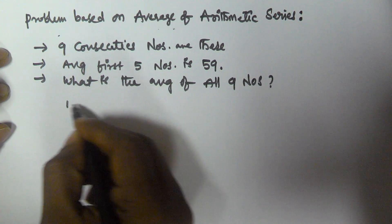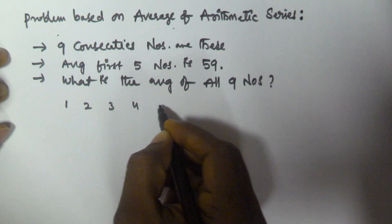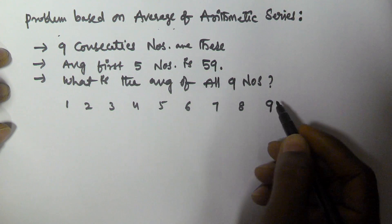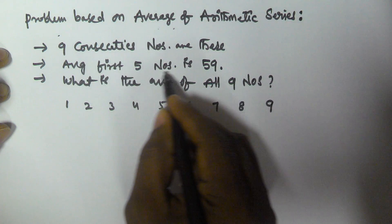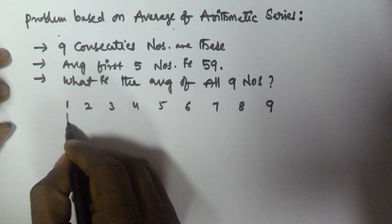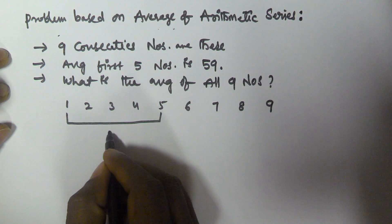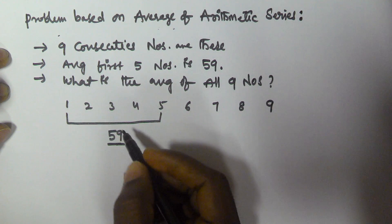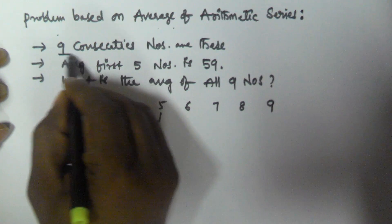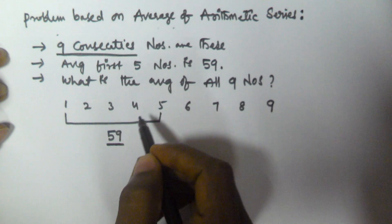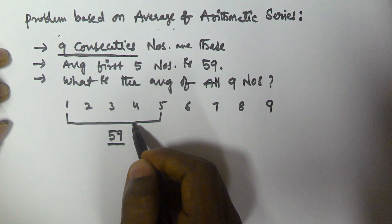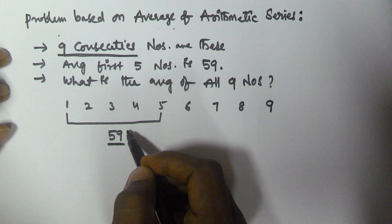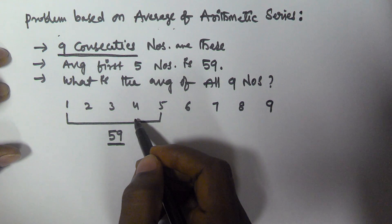Let us write out all nine numbers: one, two, three, four, five, six, seven, eight, nine. The average of the first five numbers is 59. These nine numbers are consecutive, which means they are in arithmetic series.